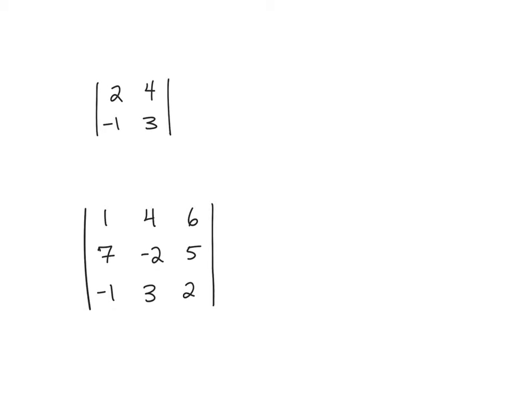So second order determinants, you always multiply along the diagonals, and you're going to do the product of this diagonal, always top left to bottom right, minus the product of this one. So this is going to be 2 times 3 minus 4 times negative 1, which the value of that determinant is 10.